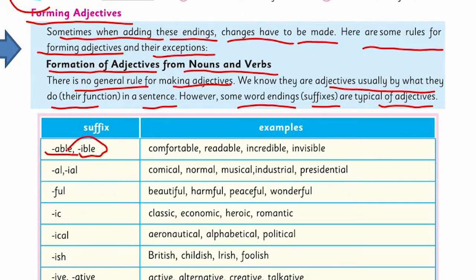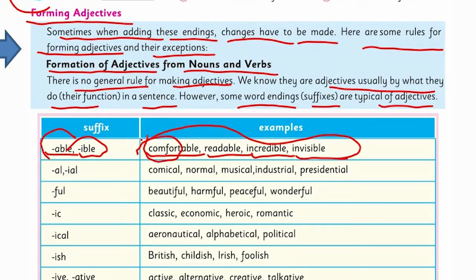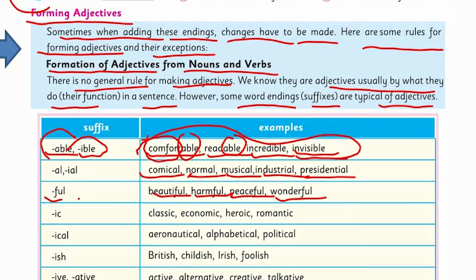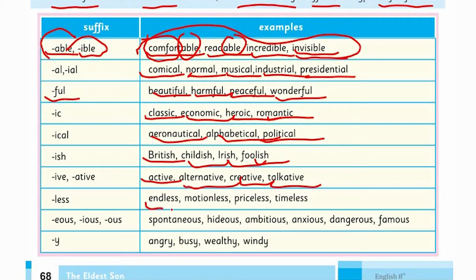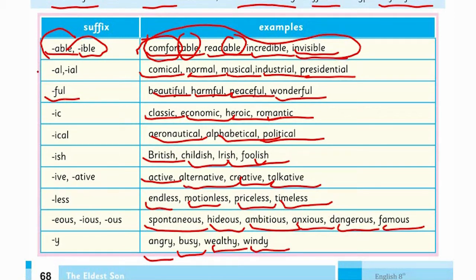Common adjective suffixes include: -able and -ible, like comfortable, readable, incredible, invisible. Then -al, like comical, normal, musical, industrial, presidential. Then -ful, like beautiful, harmful, peaceful, wonderful. Also -ic, like classic, economic, heroic, romantic. And -ish, like alphabetical, political, British, childish, Irish, foolish. Further: -ive like active, alternative, creative, talkative; -less like endless, motionless, priceless, timeless; -ous like spontaneous, hideous, ambitious, anxious, dangerous, famous; and -y like angry, busy, wealthy, windy.